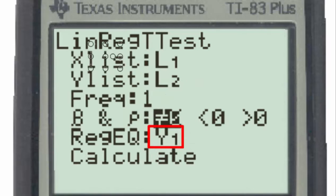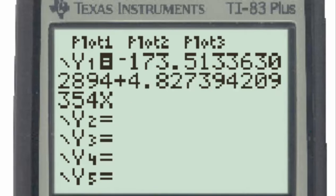we commanded the calculator to paste the equation of the regression line into the y equal to button under y subscript 1. And here we see the equation of the regression line, y is equal to negative 173.5 plus 4.83x.